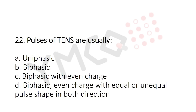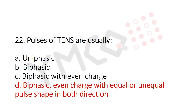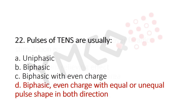Question 22: Pulses of TENS are usually — option A: uniphasic; option B: biphasic; option C: biphasic with even charge; option D: biphasic even charge with equal or unequal pulse shape in both directions. The answer is option D: biphasic even charge with equal or unequal pulse shape in both directions.